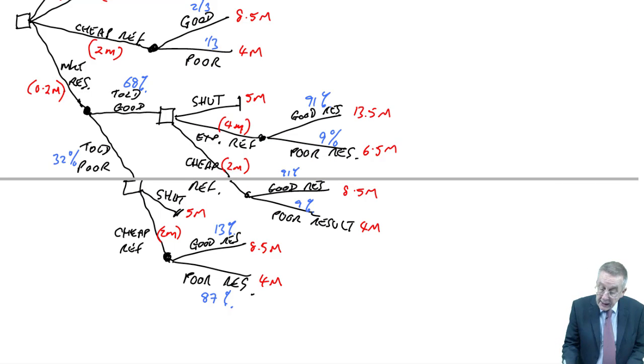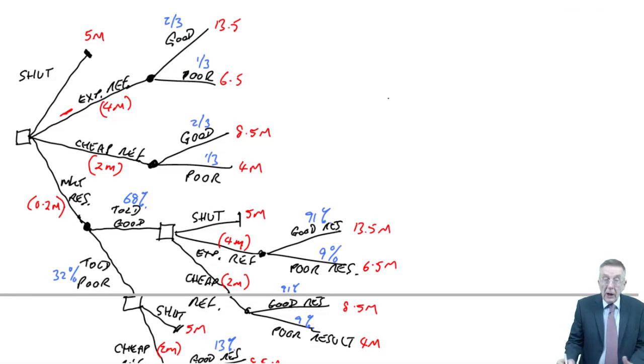Okay, now this is the second of two lectures on decision trees. So I hope you've made sure you're happy about the way I've drawn it, the way I've costed it, because now we're going to go through and actually decide what the decisions would be.